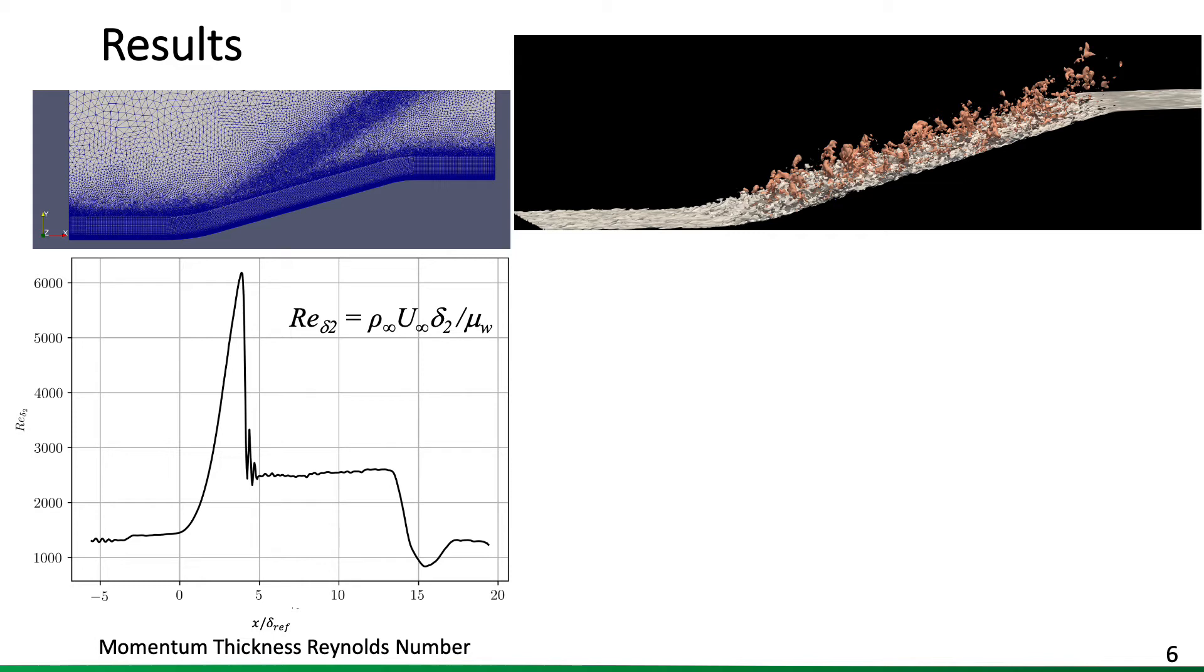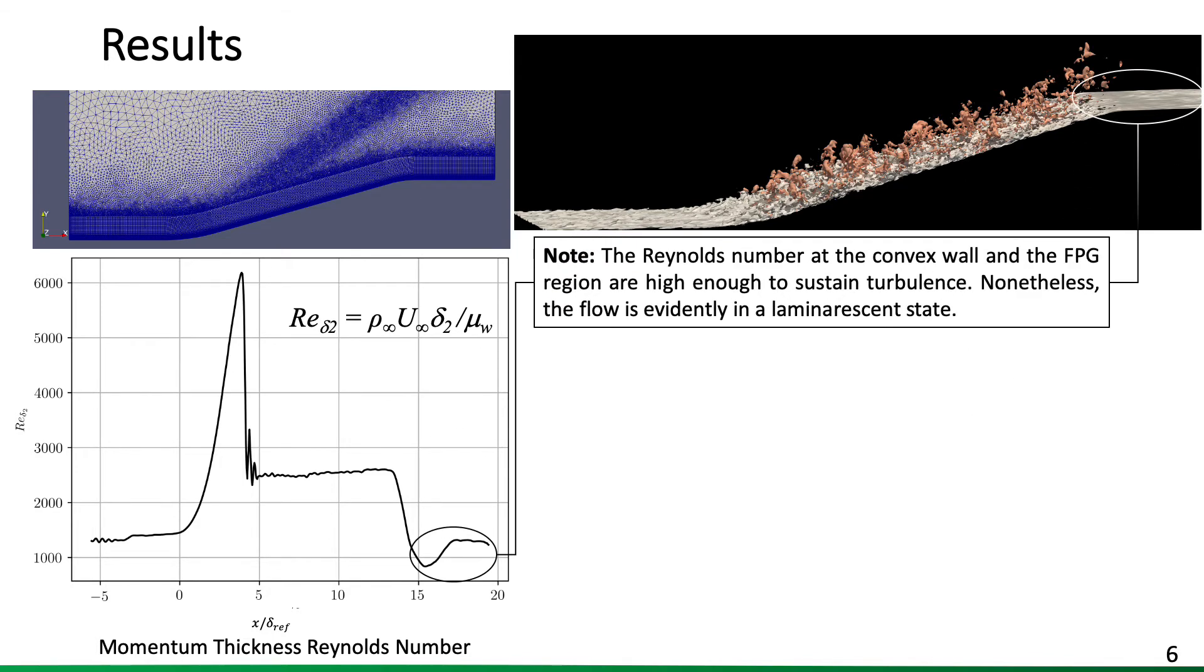Then sees a drop again to Reynolds number levels that interestingly should be enough to sustain turbulence. However, if you look at the upper right corner, you see the flow is evidently in a much more organized state, followed after the supersonic expansion, and we could argue that it's in a laminarized state.